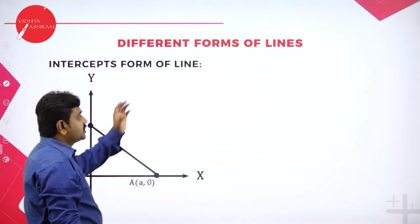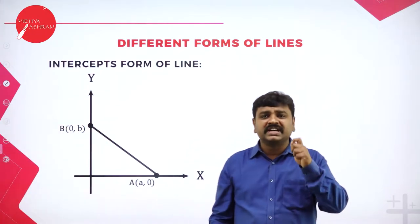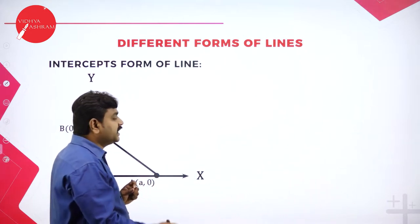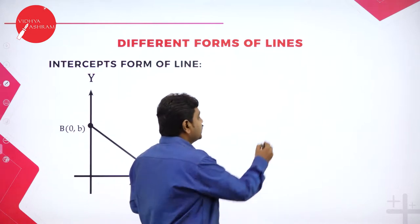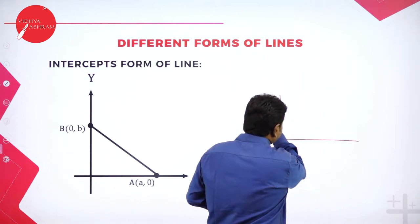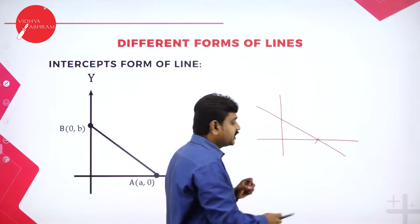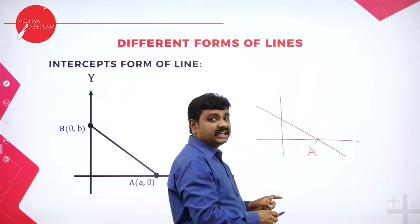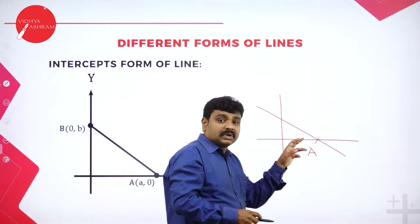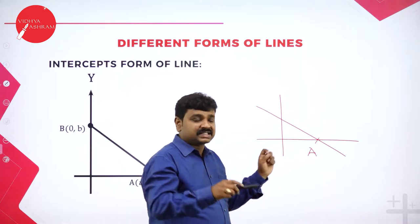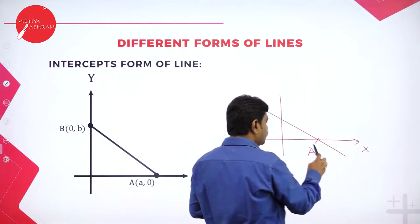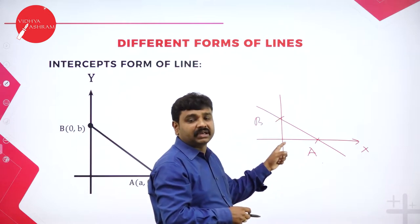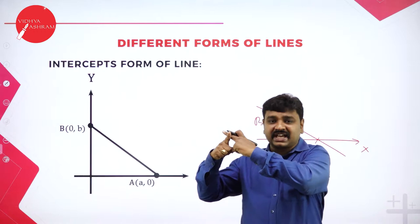In today's class we are studying intercepts form of a line. What is the word intercept? Intercept means it is a point where the line cuts an axis. Suppose I have drawn a line — this line is cutting the x-axis; where it cuts the x-axis I call it the x-intercept. And it is cutting the y-axis at b; that is called as the y-intercept.